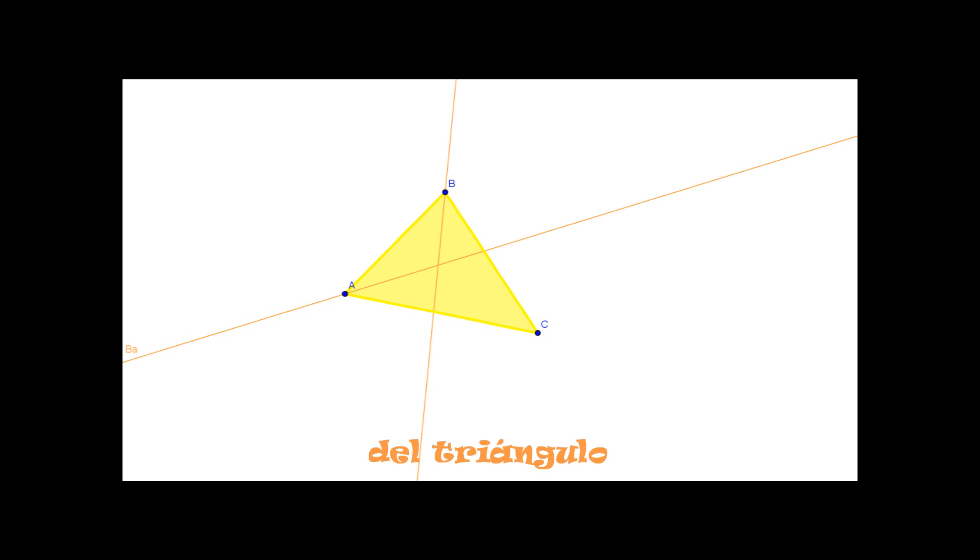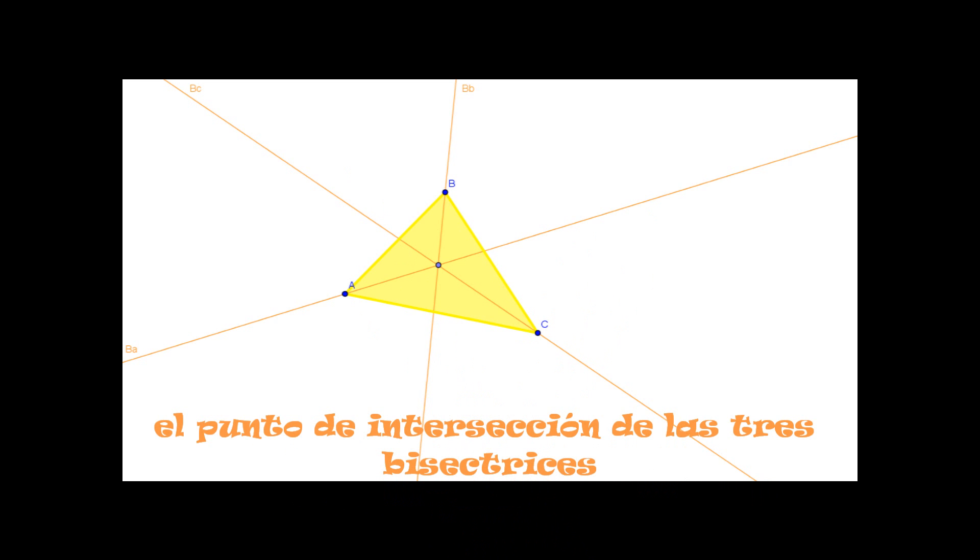Just take a point called Z in the complex plane. Let Z1 be Z squared plus C. Z2 is Z1 squared plus C. Z3 is Z2 squared plus C, and so on.